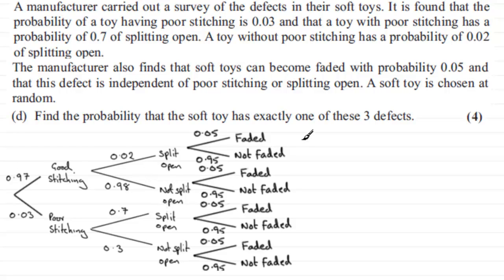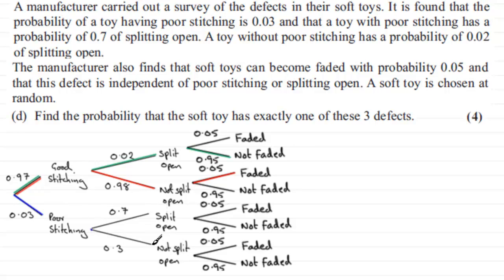I'm going to illustrate these in color. For instance, we could have good stitching — not a defect — but then it splits open, which is a defect, but then it doesn't fade, so we have just one defect there. Then in red: good stitching, doesn't split open, but it fades — one defect. One other alternative in blue: the defect comes from poor stitching, but then it doesn't split open and doesn't fade.